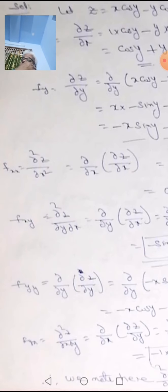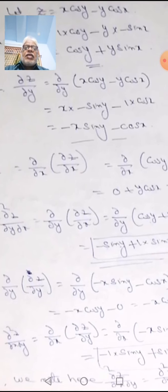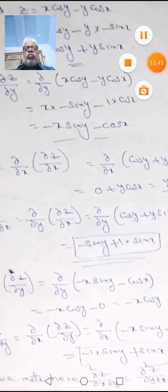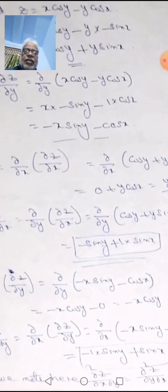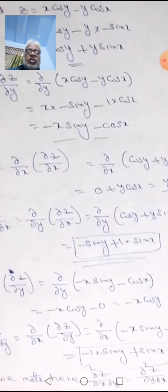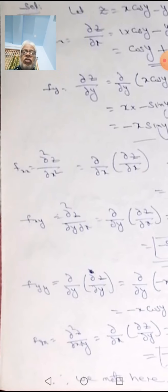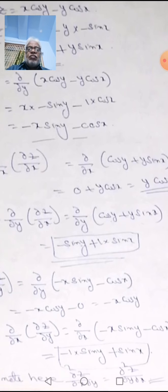For dou²z/dou y²: differentiate dou z/dou y again with respect to y. dou z/dou y was -x·sin(y) - cos(x). Here x is constant, derivative of sin(y) is cos(y), giving -x·cos(y). The derivative of cos(x) with respect to y is 0. So dou²z/dou y² equals -x·cos(y).